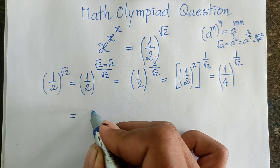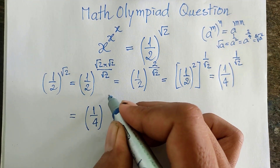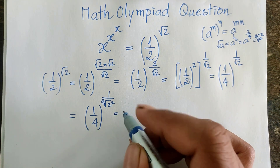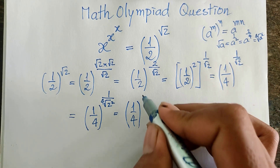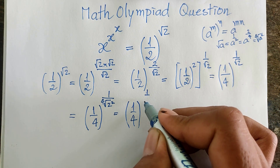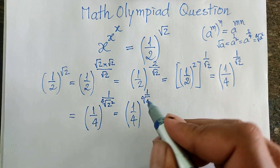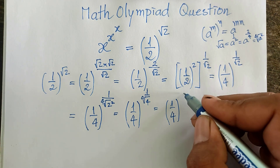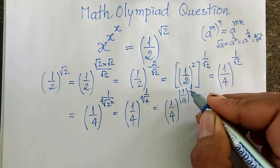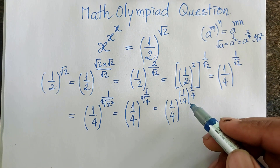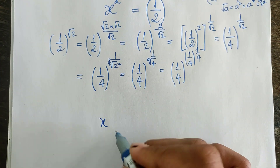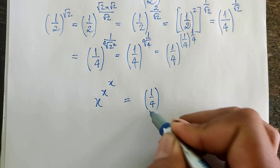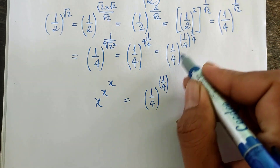So this is equal to 1 divided by 4, to the power of 1 divided by 4. And 1 divided by 4 to the power of 1 divided by 4 is the 4th root of 1/4. So now we have 8^8^8 equal to (1/4)^((1/4)^(1/4)).